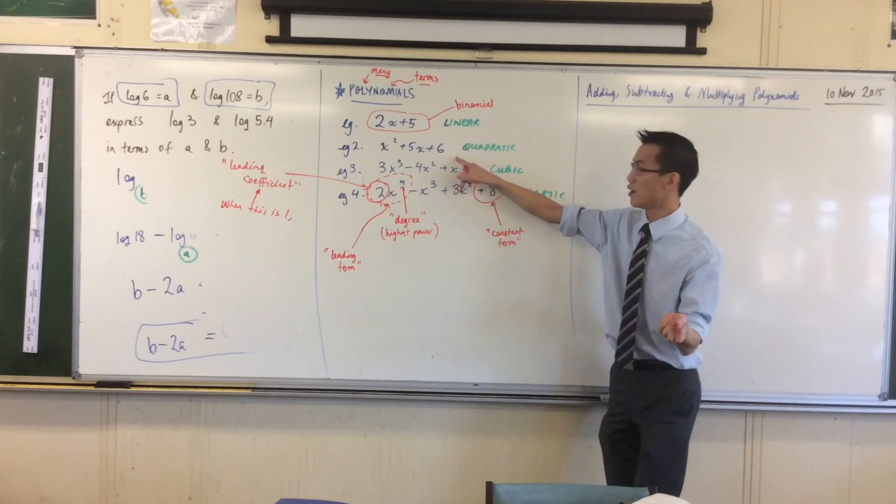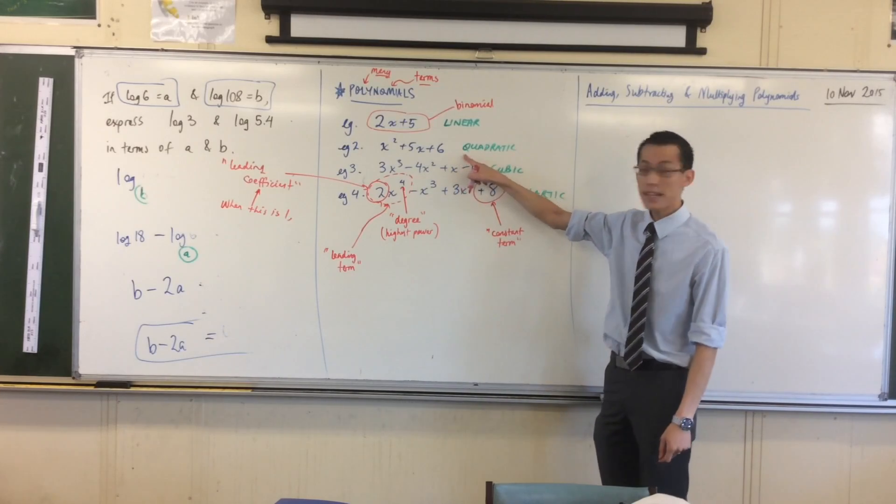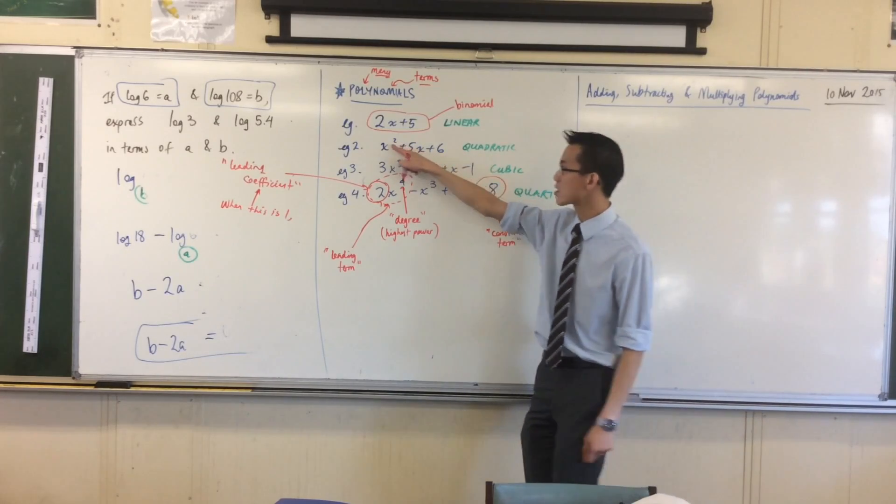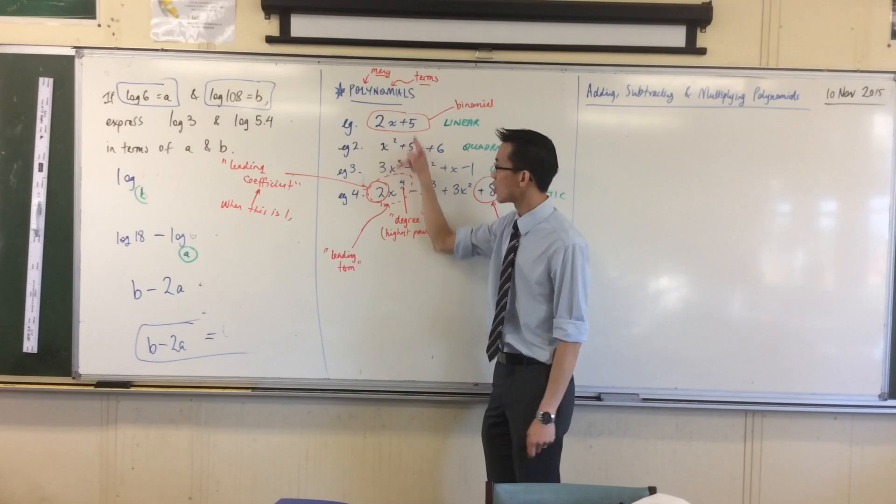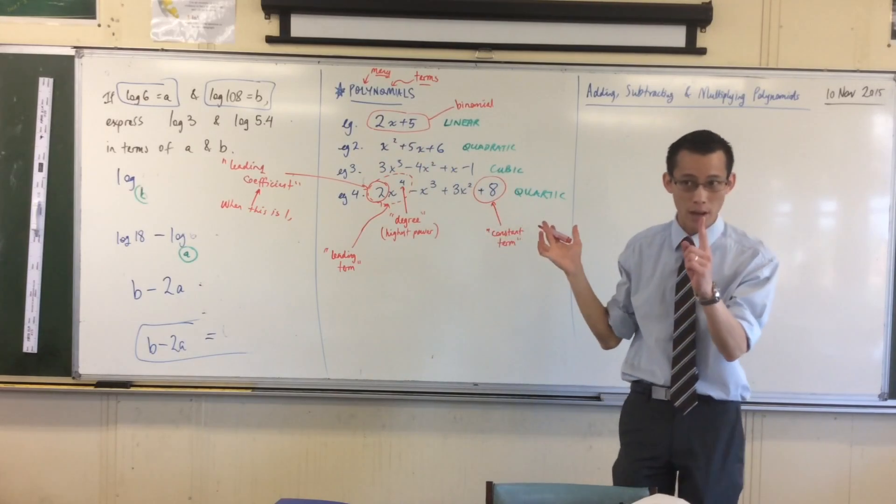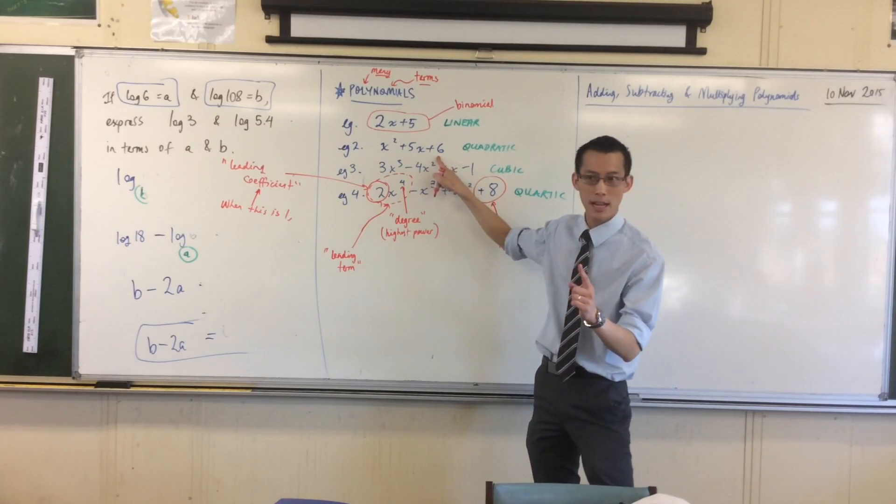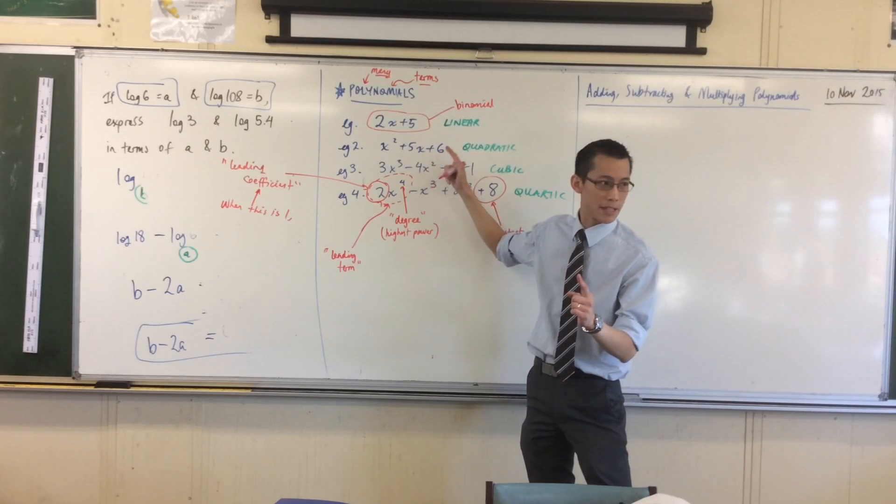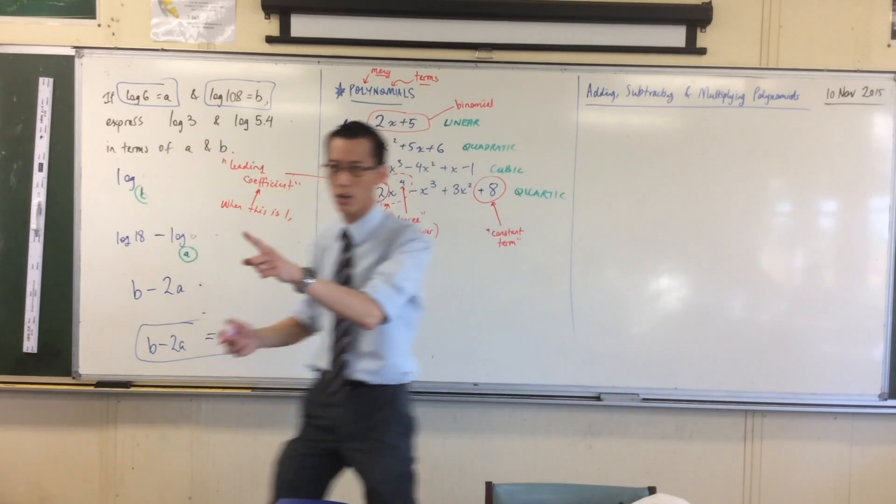It's a name you actually already learned from quadratics. In fact, here's a quadratic, there's the degree, this is the leading term. So what's the leading coefficient for that one? It's 1. So we call this, it starts with M, it's a word that means 1. And we call it a monic quadratic.